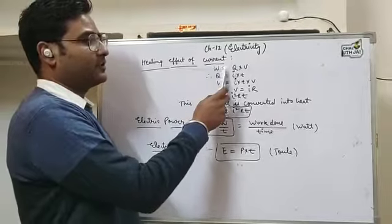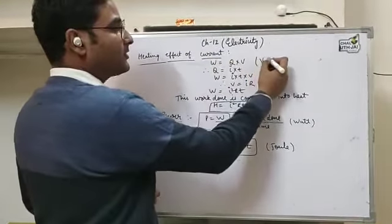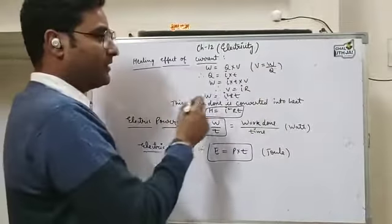As we all know, work W equals Q into V. We get this formula from V equals W upon Q. Just by cross-multiplying, we get W equals Q into V.